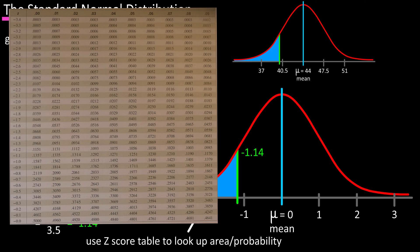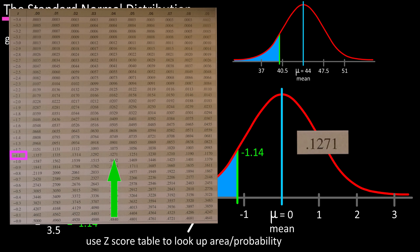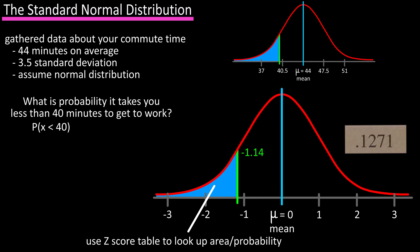You can find this table through an internet search or in any statistics book. We find negative 1.1 in the left column and go over five columns to the right under .04, which is negative 1.14, and the value equals 0.1271.